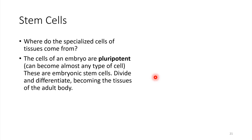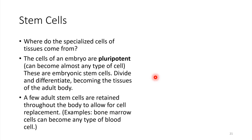So what about in adults? Once you're an adult, you have to have some way of replacing tissues as needed, and this is where stem cells come into play. Even in the adult human body, there are some stem cells that are retained — we don't call them embryonic stem cells anymore, rather they're just stem cells. An example of this would be bone marrow; the cells in bone marrow have the potential to become any type of blood cell that we might need.